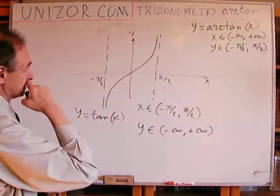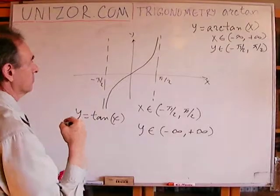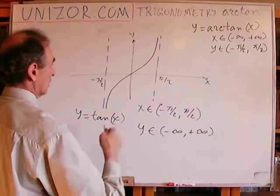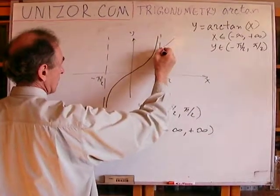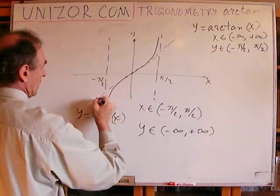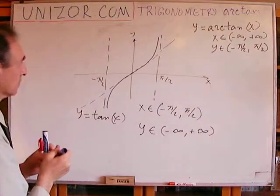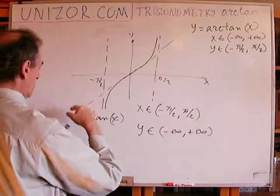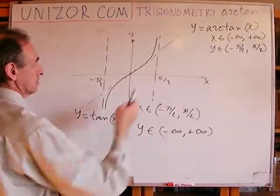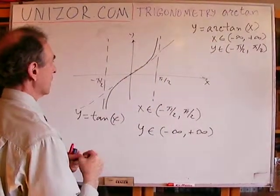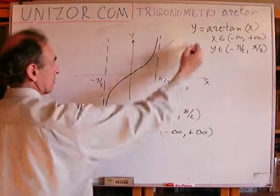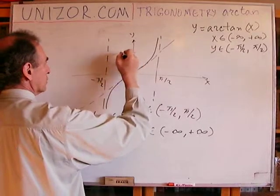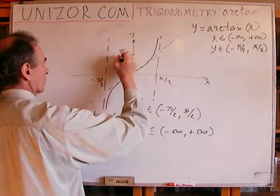Okay, the picture would look like this. -π/2, π/2. This is x, this is y, and the graph looks like this. That's my tangent.